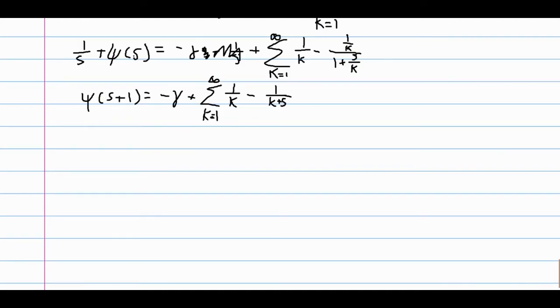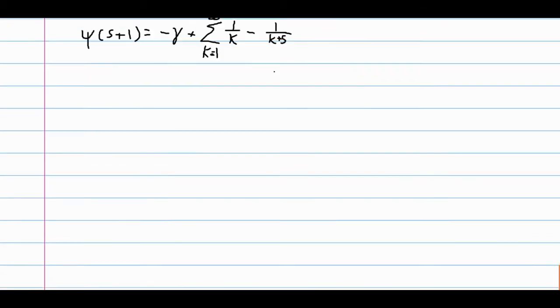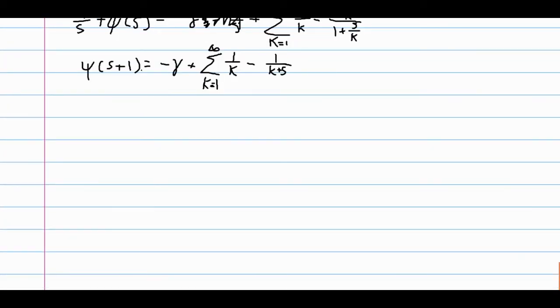And so this is known as the series representation of the digamma function. And so notice that this 1 over k, 1 over k plus s, if we were to make s equal to 0, then this whole sum would go away. And if we were to make s equal to 0, we would get the digamma of 1. So, digamma of 1 is negative gamma, or negative Euler-Mascheroni constant.